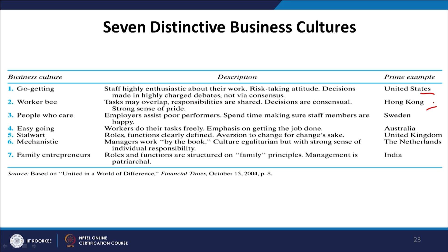The third type is 'people who care' — employees assist poor performers and spend time ensuring staff are happy — found in Sweden. Fourth is 'easy-going' — workers do tasks freely with emphasis on getting the job done — found in Australia. Fifth is 'Star Wars' — roles and functions are clearly defined with aversion to change for change's sake — found in the United States. Sixth is 'mechanistic' — managers work by the book with egalitarianism but strong individual responsibility — found in the Netherlands. Seventh is patriarchal management — found in India.